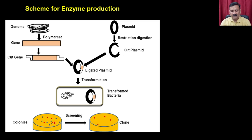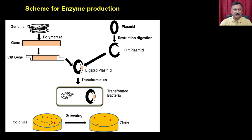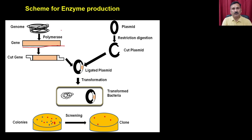What you can see is a scheme for enzyme production. We have already discussed many aspects of this scheme — you are going to isolate the gene fragment from the genome, either using the genomic library approach, the cDNA approach, or PCR. Once you have these genomic sequences, you perform restriction digestion to get sticky ends.